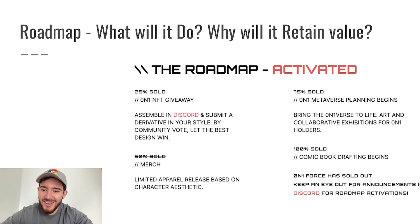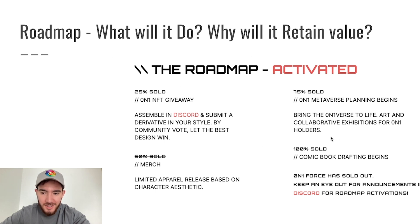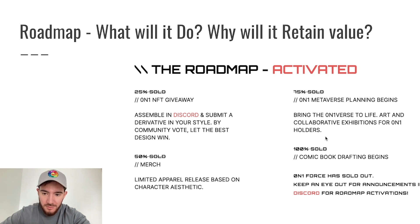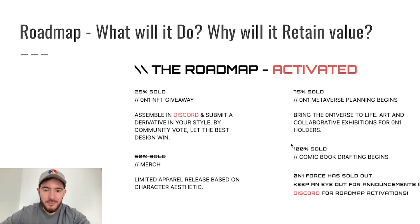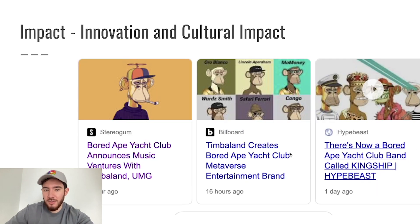Here's another roadmap example — this one is for On One. Right after the sale they're going to do a Discord community vote on the best design, then drop apparel — though I'm not really a big fan of apparel being in a roadmap since it's pretty easy to make a t-shirt. Next is art collaboration exhibitions for On One holders, and then comic book drafts, so they're coming out with a comic book as well.